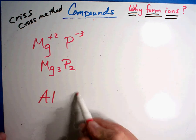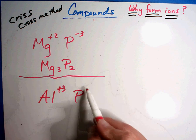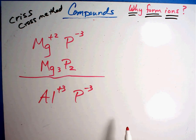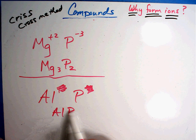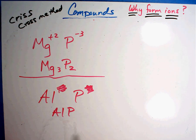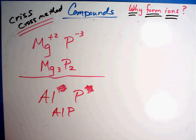So what happens if you had this one? Al and P. Plus three, minus three. Do they equal zero? Yep. Then they're gone. The answer is AlP, aluminum phosphide. You don't switch anything. You only do the Criss Cross method if they don't equal zero.